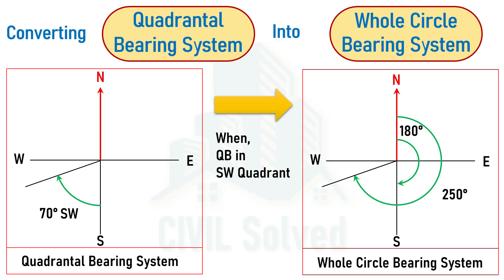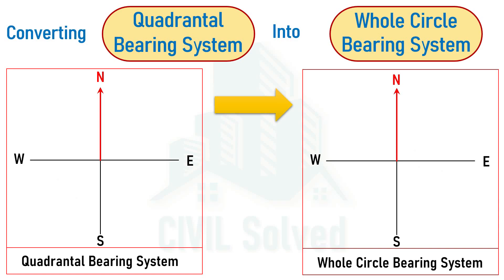which gives 250 degrees. The generalized equation when the line lies in the southwest quadrant is: WCB = 180 degrees plus the angle in quadrantal bearing system.